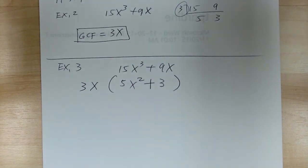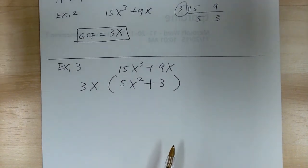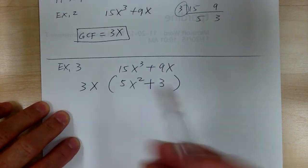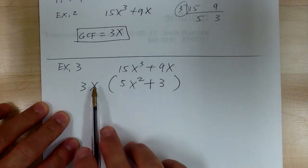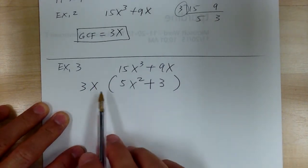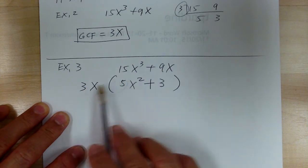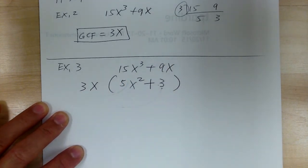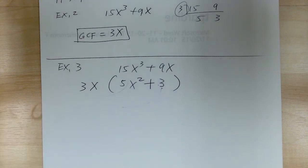Factoring and multiplication are the reverse of each other. You did this in Chapter 3 — you used distribution to expand. Now you're going back and factoring, which means you're taking out the common factors.